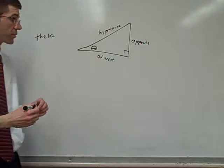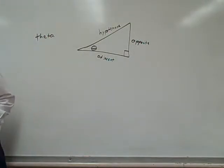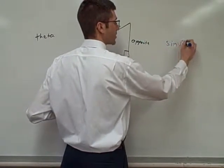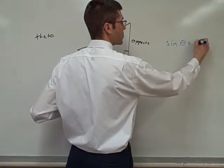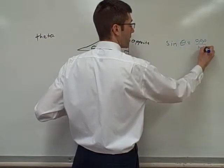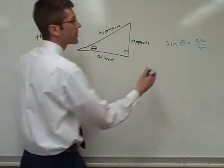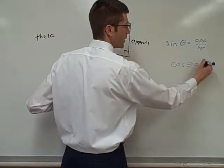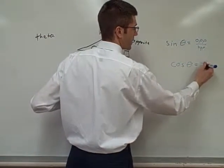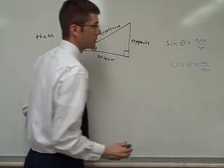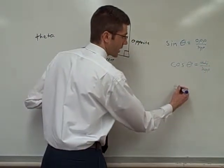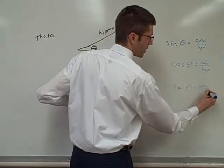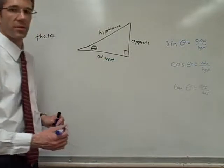And then we have our three major trig functions that we use. And one of them is sine. So the sine of any angle, sine of theta, is equal to the opposite divided by the hypotenuse. Cosine of our angle is adjacent divided by our hypotenuse. And tangent is opposite over adjacent. I really hope you can see that. My pen's about dead.